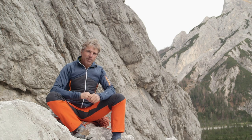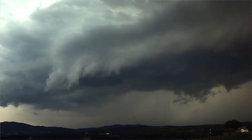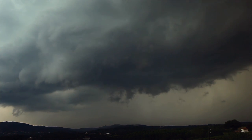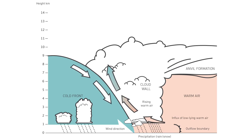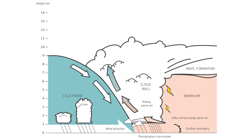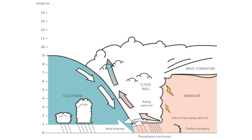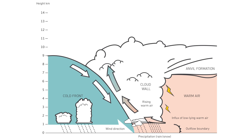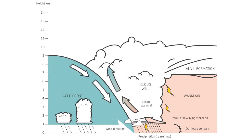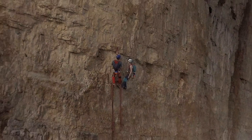Frontal storms often represent the end of a period of fine weather in the form of a sudden drop in temperature. Significant cloud thickening is an indication of this — the sky becomes darker and darker when looking to the west. If we are on an easterly rock face, we often notice this phenomenon too late.